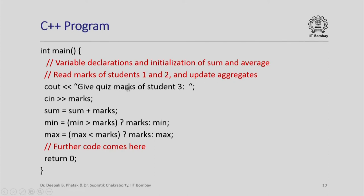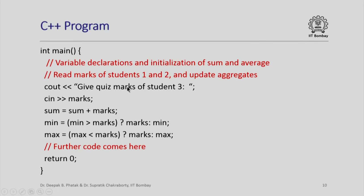After doing this for students 1 and 2, we do a very similar thing for student 3 — almost all the statements are identical to what we did for student 2. After doing this for all students from the first to the tenth and updating the aggregates, we compute the average as sum divided by 10.0. Note that sum is an integer and 10.0 is a float, so the result is a float. We then print out the average, sum, min, and max, and return 0 to the operating system.